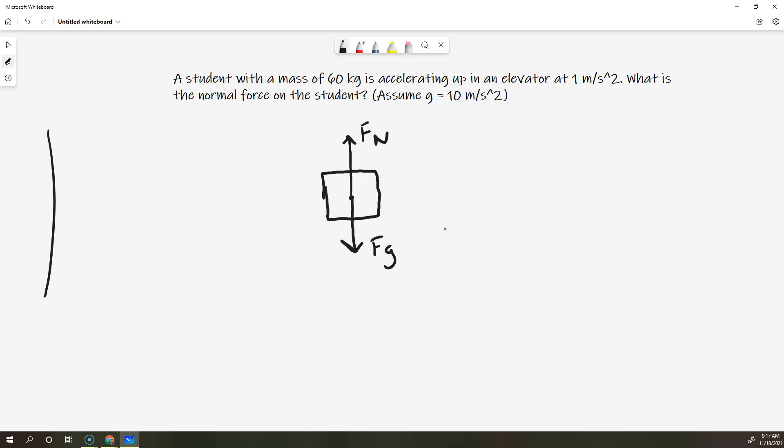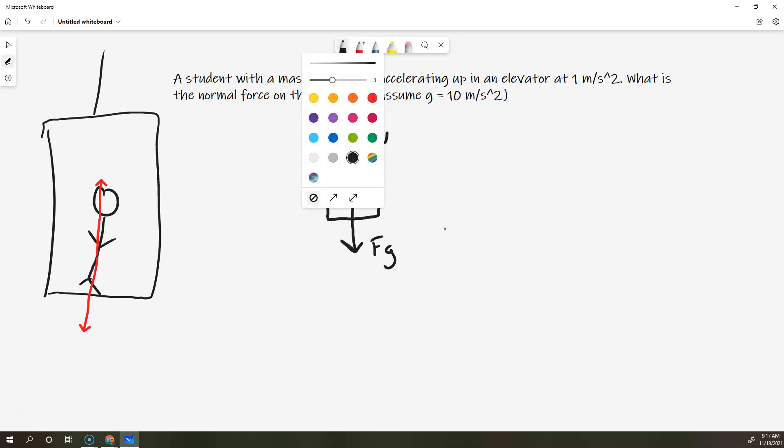Perpendicular to what? Well, if this is the elevator, and this is the student inside the elevator, they've got their Fg down, and the force of the elevator up. And they are standing on the surface of the elevator, and so perpendicular to the surface is that normal force. So, we've drawn our free body diagram.